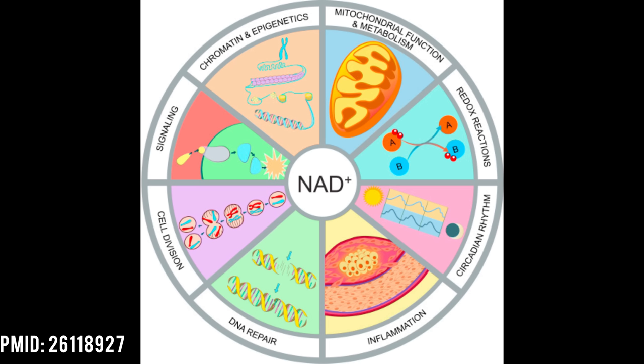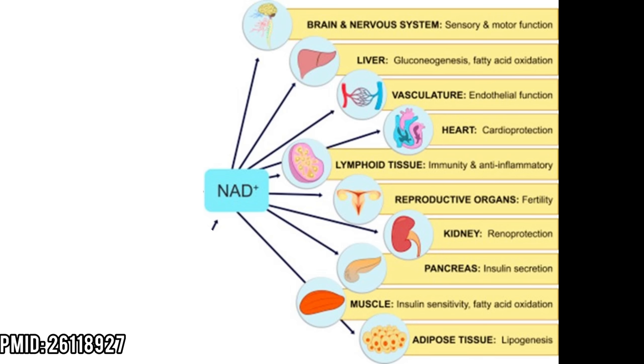What is NAD? NAD, or nicotinamide adenine dinucleotide, is a coenzyme that's found in all living cells. You need NAD for energy production, metabolic processes, mitochondrial function, antioxidant defense, DNA repair, and circadian rhythm alignment.